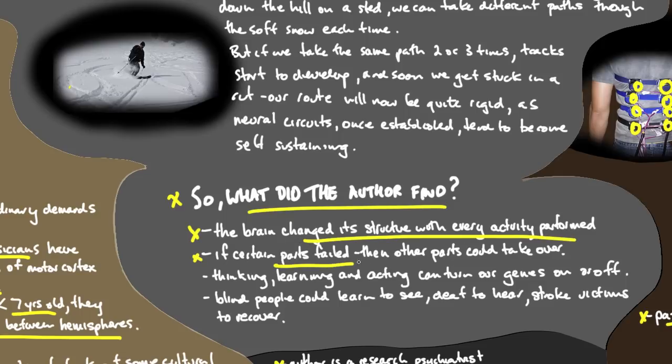The brain changed its structure with every activity performed. If certain parts of the brain failed, then other parts could take over. Thinking, learning, acting can actually turn our genes on or off. Through case studies, we've learned that blind people can learn to see, deaf to hear, stroke victims to recover, all due to the plasticity of our brain.